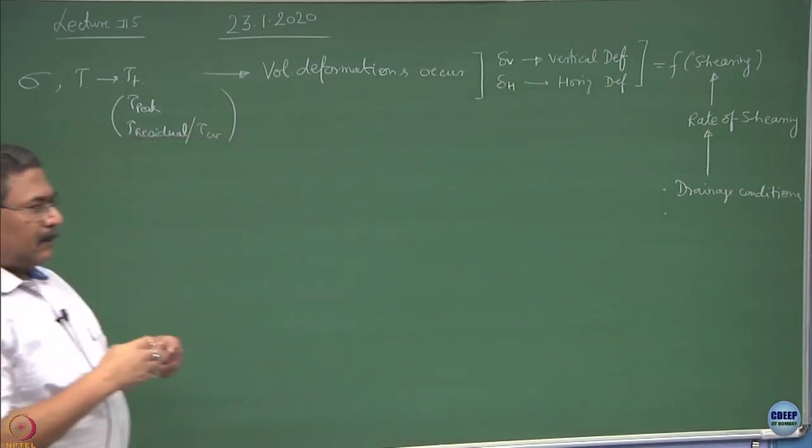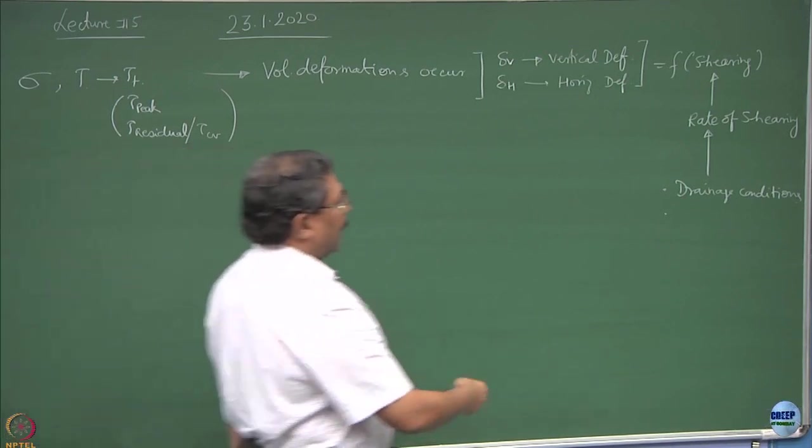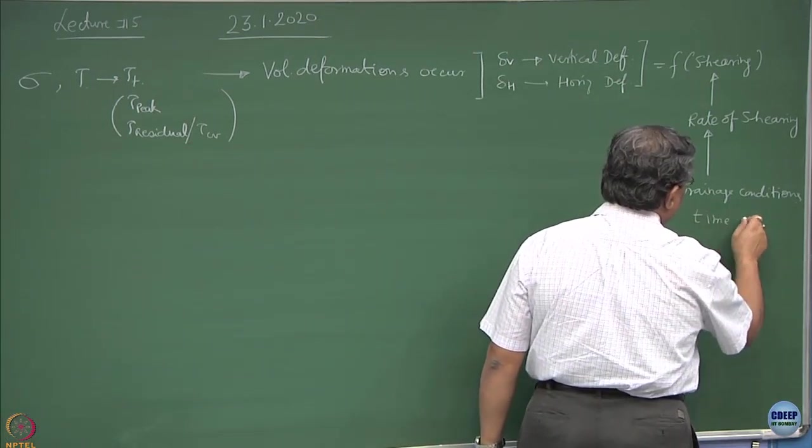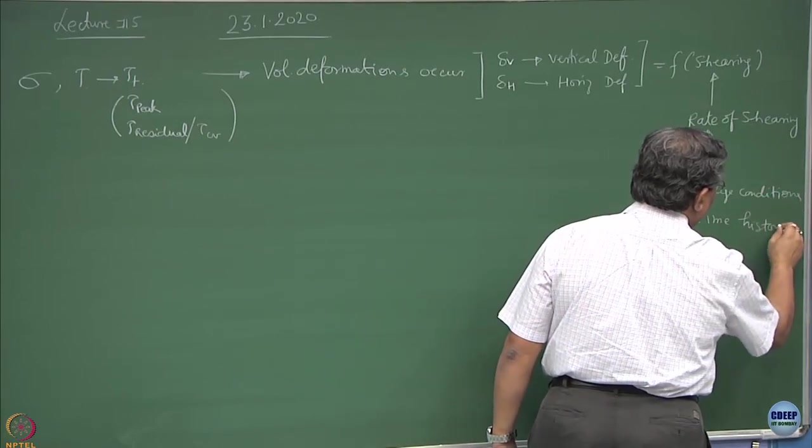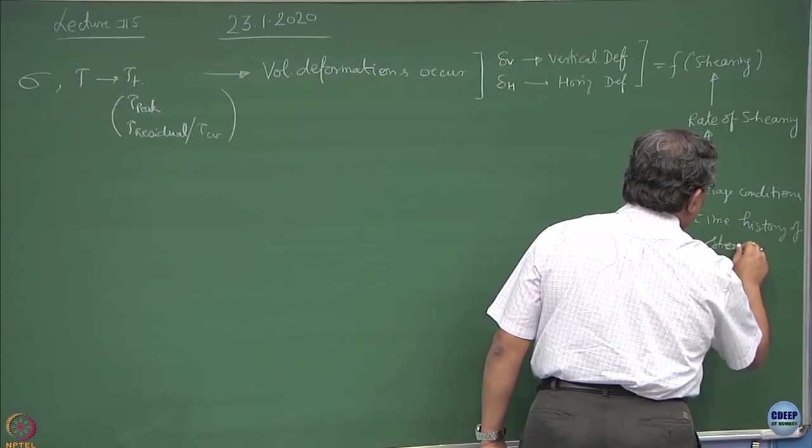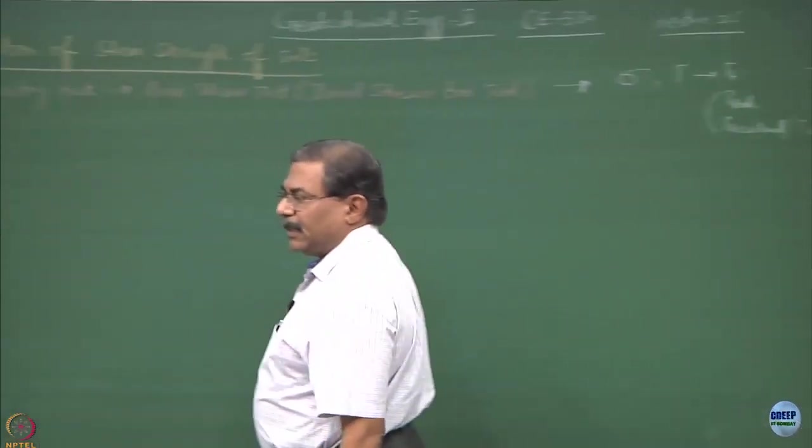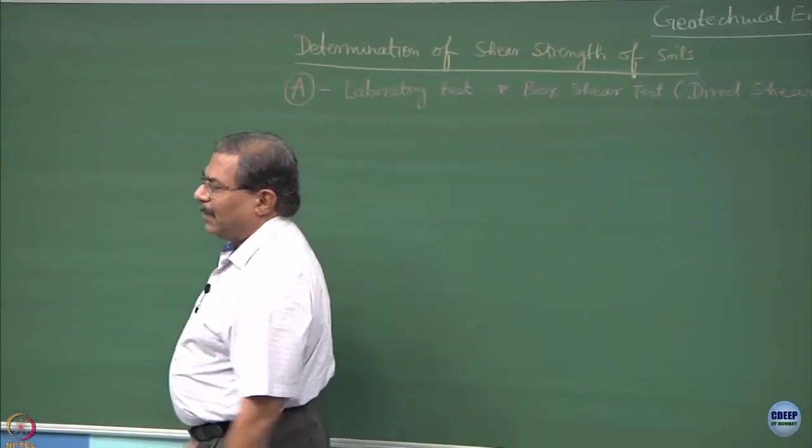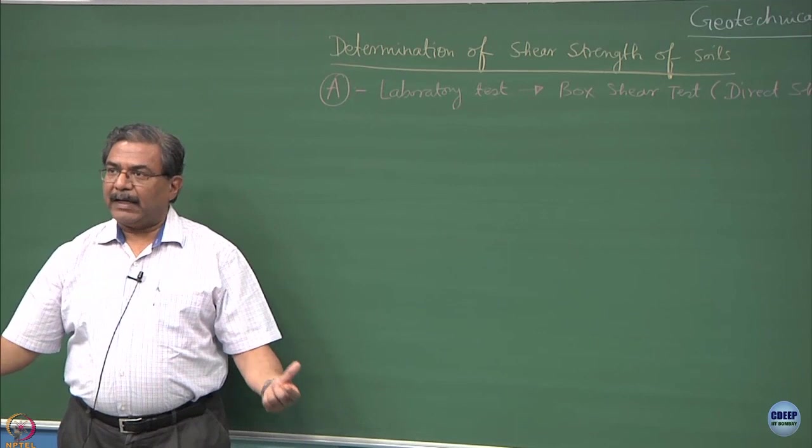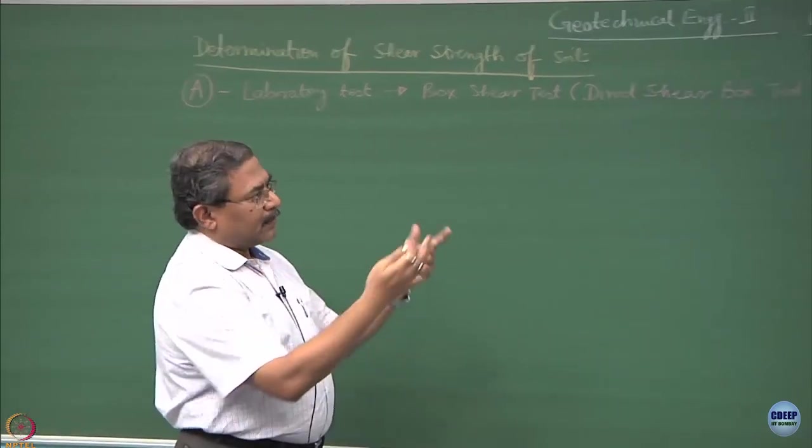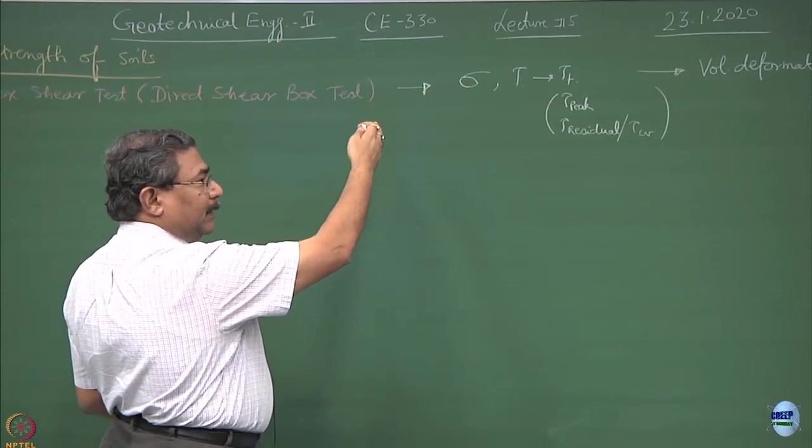The whole response of the material is during shearing, not under the static condition. So what we want to obtain here is delta v and delta h. This is the vertical deformation of the sample and this is the horizontal deformation of the sample as a function of shearing. The rate of shearing is the first parameter which governs the shear strength of the soil. Rate of shearing is adopted in such a manner that you want to simulate the response of the drainage conditions.